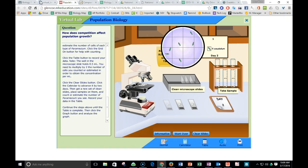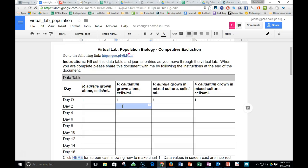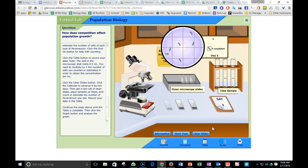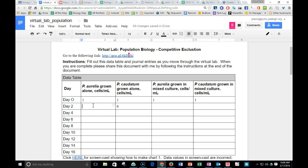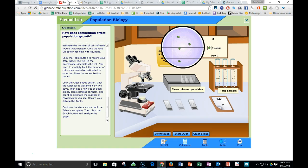And so one, two, three, four, five, six. You'll go over here. There's six of the caudatum. You'll go back. There's four of the aurelia. And then together, you got one, two, three, four, five caudatum.